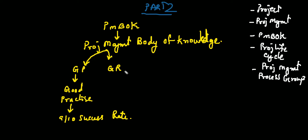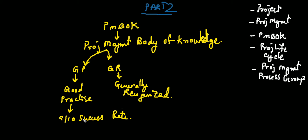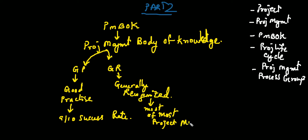Another component of the PMBOK is called 'generally recognized.' Generally recognized means it is an agreement that if you apply the knowledge from the PMBOK, you can use it on most projects, most of the time.